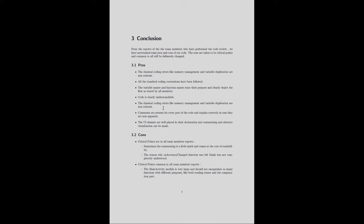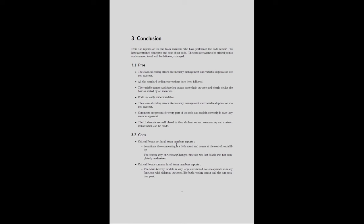The reports also reveal some cons. Critical points not common to all team members: sometimes the commenting is a little too much and comes at the cost of readability; and the reason why the on-accuracy-changed function was left blank was not completely understood by all evaluators. Critical points common to all team members: the main activity module is very large and should not encapsulate so many functions with different purposes — such as both reading sensors and the computation part. This point was highlighted by all evaluators.